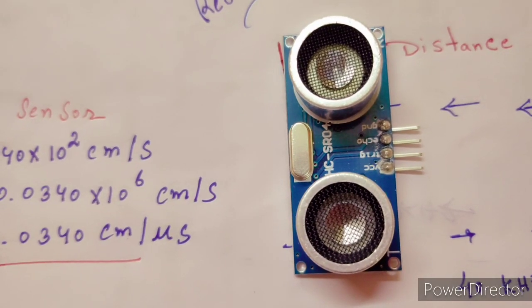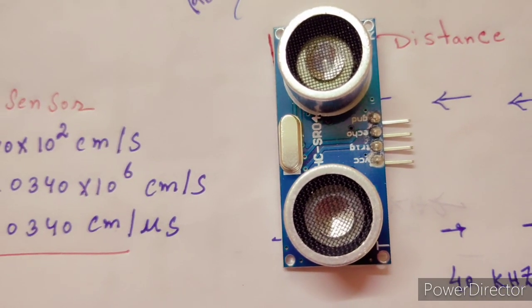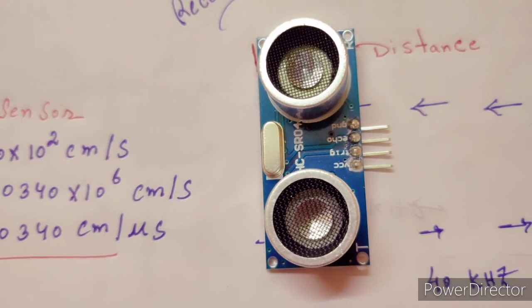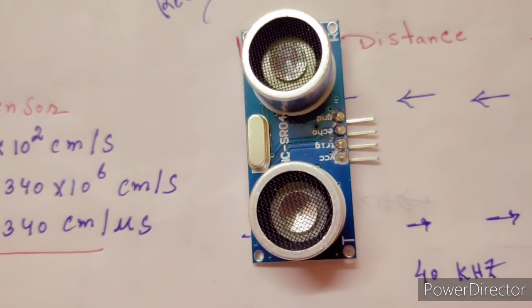To get the distance, the range of these sensors is 2 centimeters to 400 centimeters, which is used in robotics, pathfinding robots, obstacle detectors, etc.